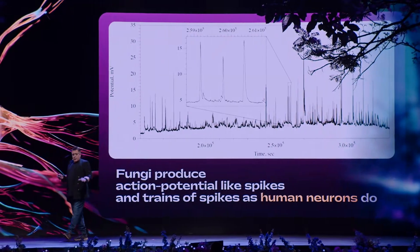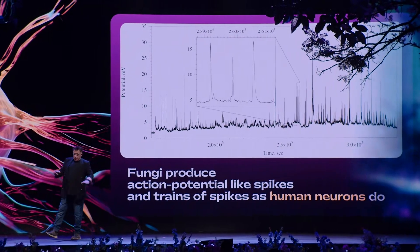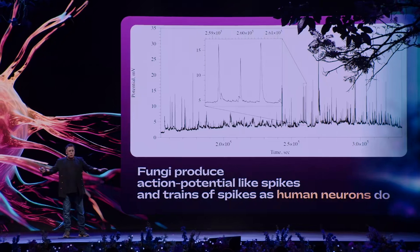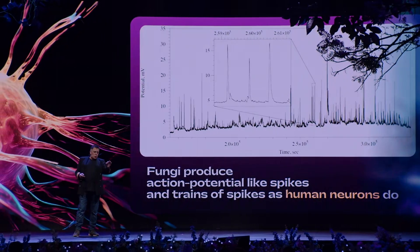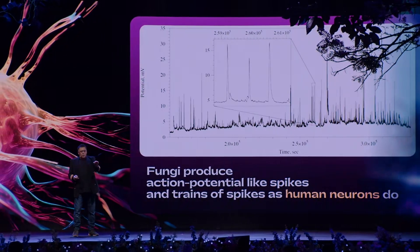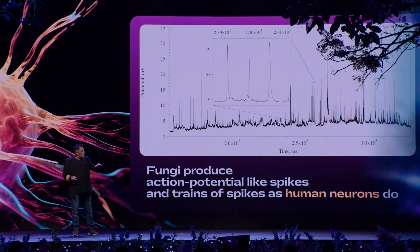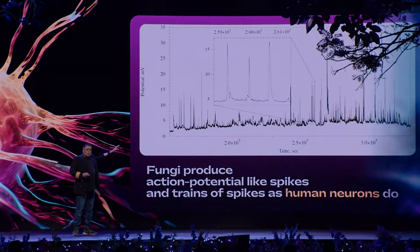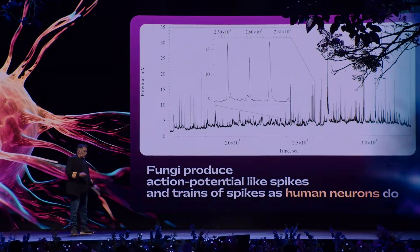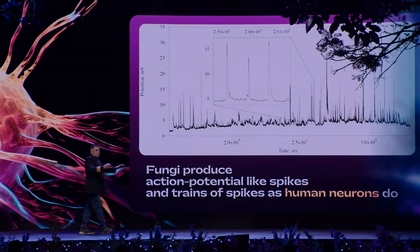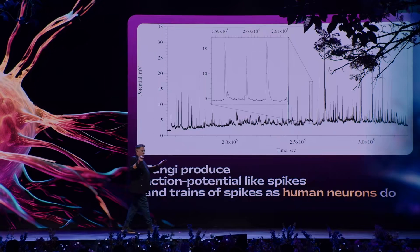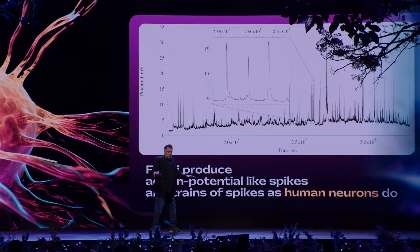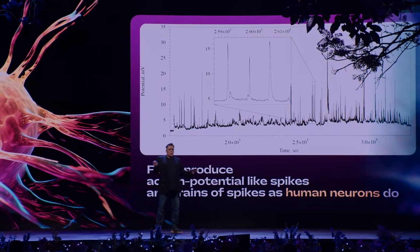We can imagine we have a large mycelium and each branching point of the mycelium produces neuron-like spikes. So the whole mycelium network acts as a neural network with about millions of neurons.